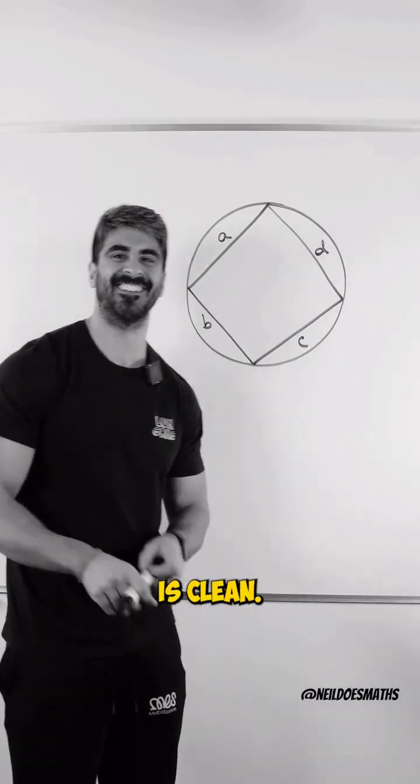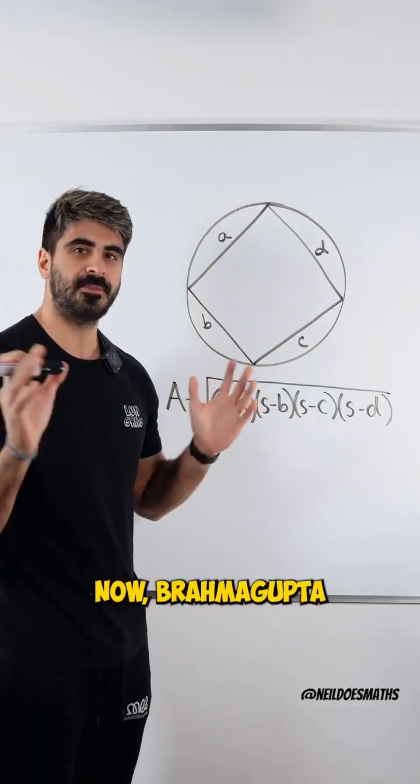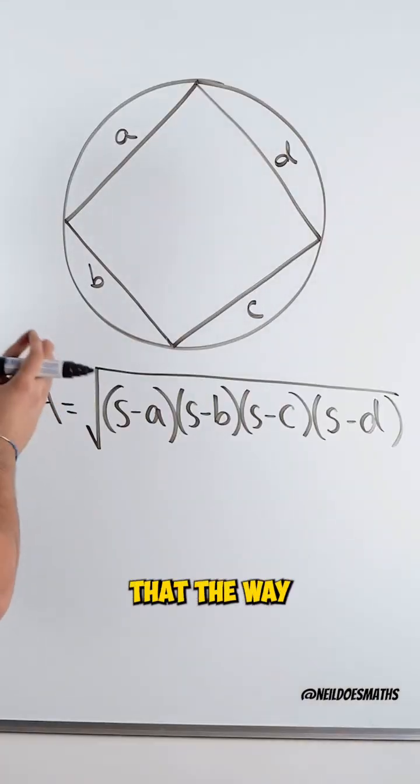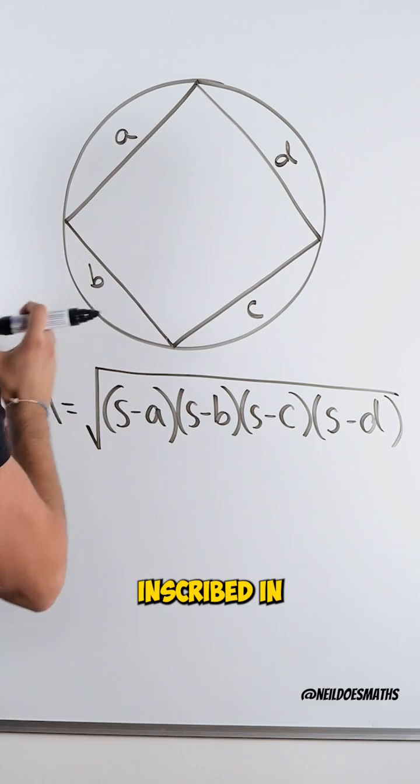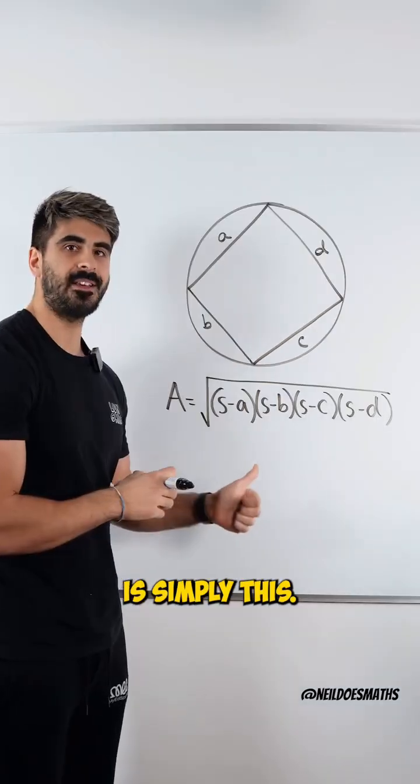Eyo that circle is clean. Now Brahmagupta discovered that the way to find the area of this rectangle inscribed in the circle is simply this.